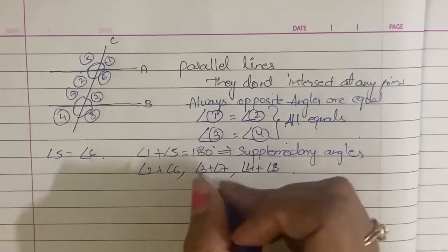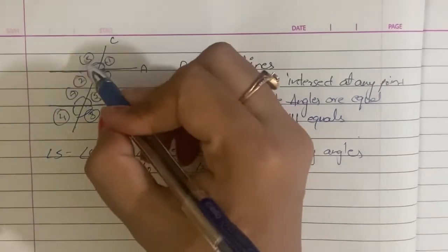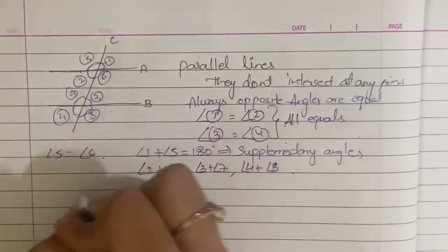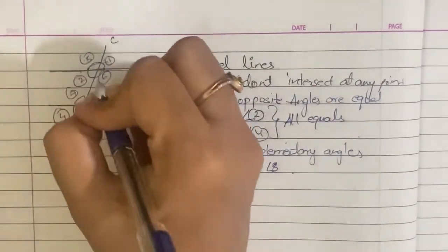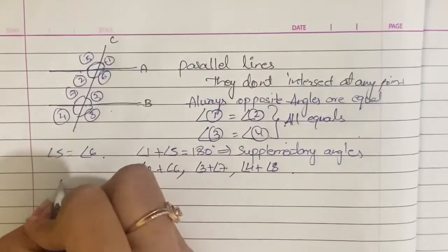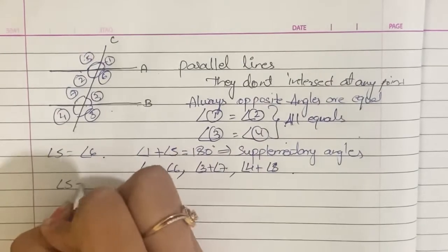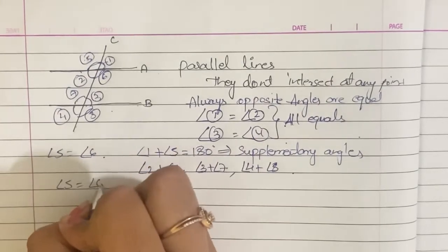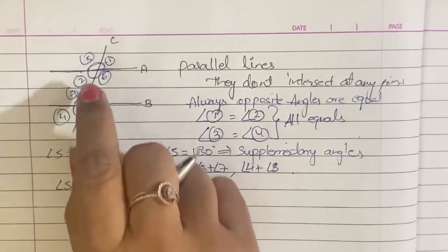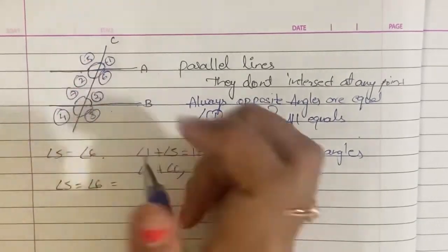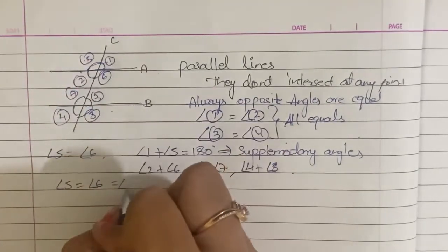Similarly, Angle 5 and Angle 6 are opposite angles, so Angle 5 is equal to Angle 6. For parallel lines, Angle 7 is also considered.